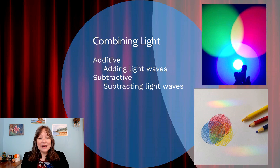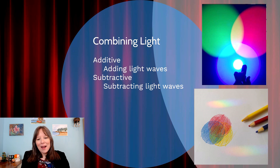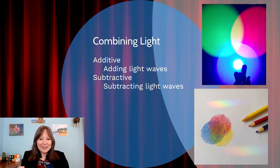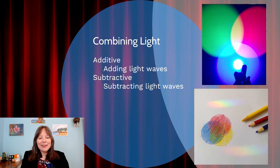Then we have the subtractive theory of light — this is when we're adding pigments together. Because pigments absorb light, adding lots of pigments together results in the reflection of less light over time. Drawing with three colored pencils — red, yellow, and blue — the center of that Venn diagram becomes darker, closer to black. That's because we're removing light waves: the yellow crayon absorbs everything but yellow, the red absorbs everything but red, and the blue absorbs everything but blue. In the center, they absorb the most light and reflect the least, making it the darkest.